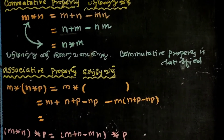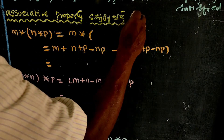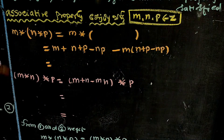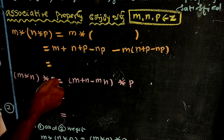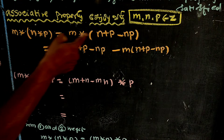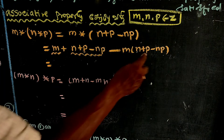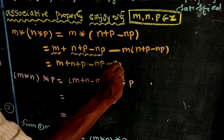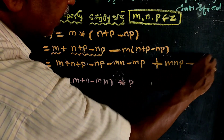Now for the associativity property, with M, N, P belonging to Z. We compute M star N star P. The star operation gives sum of two numbers minus product of two numbers. Expanding: M plus N plus P minus NP minus MN, which forms equation number one.